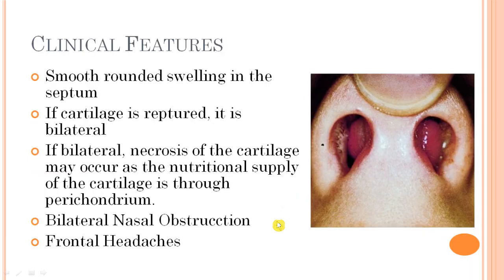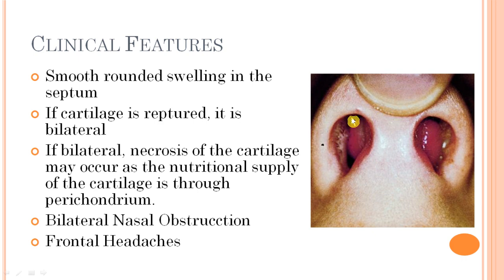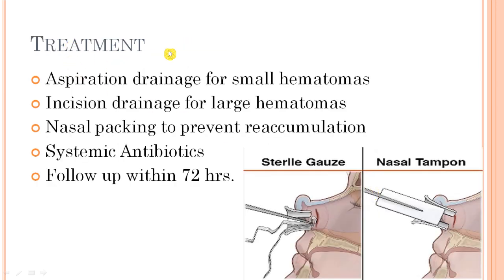Bilateral nasal obstruction also occurs because the swelling obstructs airflow, particularly in the region of the nasal valve — the narrowest cross-sectional area of the respiratory tract — which controls air inflow. Frontal headaches may also be associated with septal hematoma. In summary, clinical features include swelling, nasal obstruction, potential cartilage necrosis, and saddle nose deformity.